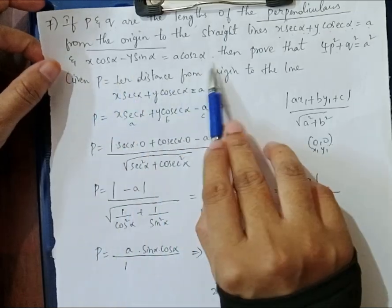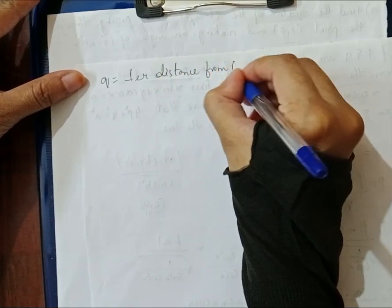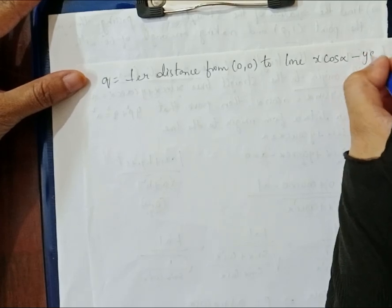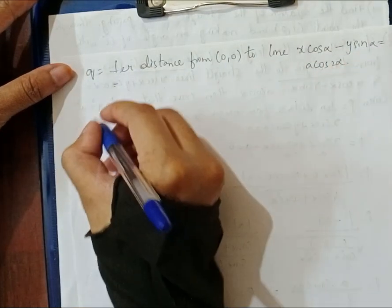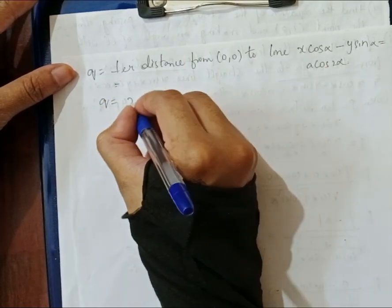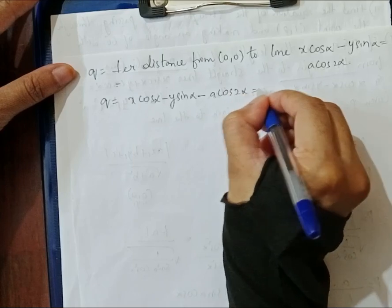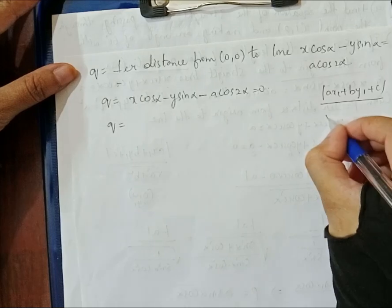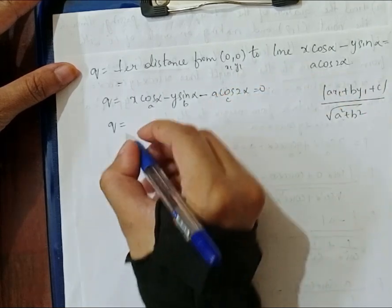Next, q is the perpendicular distance to the line x·cos(α) − y·sin(α) = a·cos(2α). Rearranging: x·cos(α) − y·sin(α) − a·cos(2α) = 0. Applying the perpendicular distance formula again: q = |cos(α)·0 + (−sin(α))·0 − a·cos(2α)| / √(cos²(α) + sin²(α)).